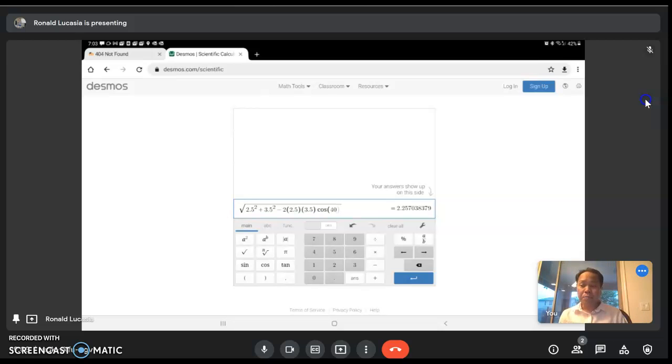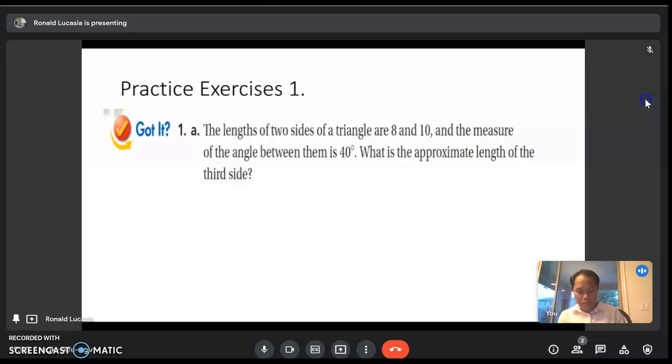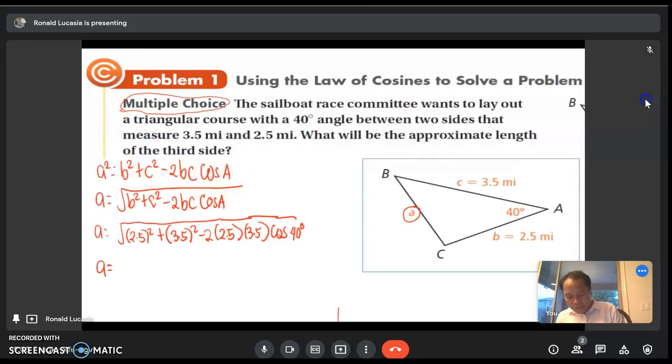Express your answer to the nearest hundredth, or two decimal places. That is going to be 2.26. So approximately, the length of side a is 2.26 miles.